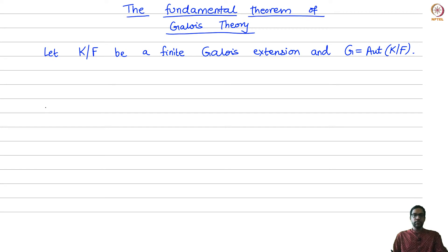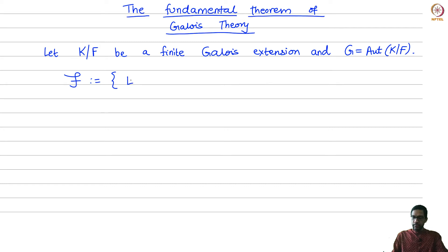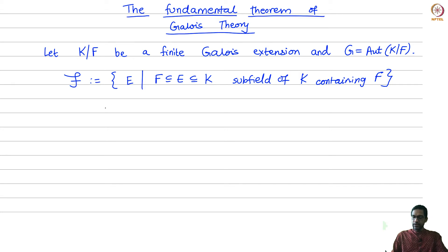We have two sorts of objects related by this fundamental theorem. On the one hand, subfields of k. Let script F be the set of all E where E is a subfield of k which contains f. This is sometimes called the set of all intermediate fields of this extension. So k and f themselves are included in script F.